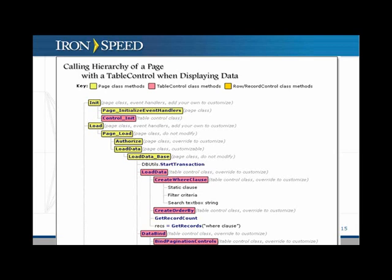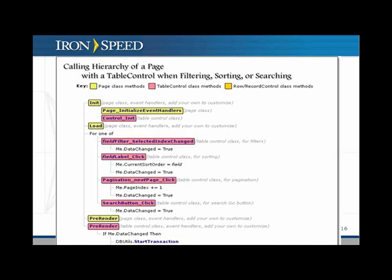There is another calling hierarchy for a table control when the user changes the filter, sorting, or searching criteria. A selected index changed event is fired, it's caught, it marks the data as changed, and then in the pre-render we load the data from the database. That's how the generated code works. I'm not going to go through each step of this calling hierarchy, but it's sufficient to get an overview of how it works, and then you can go through the code customization tutorial to learn more.